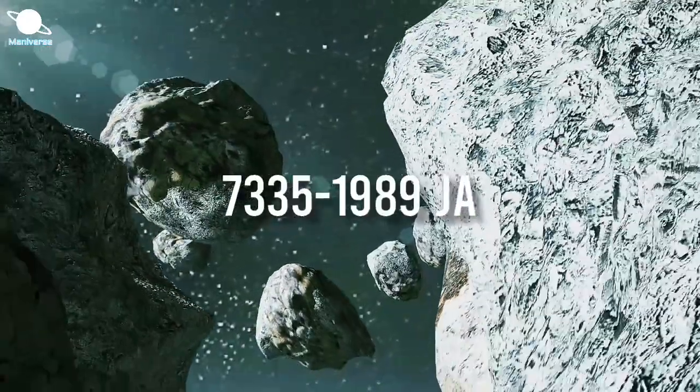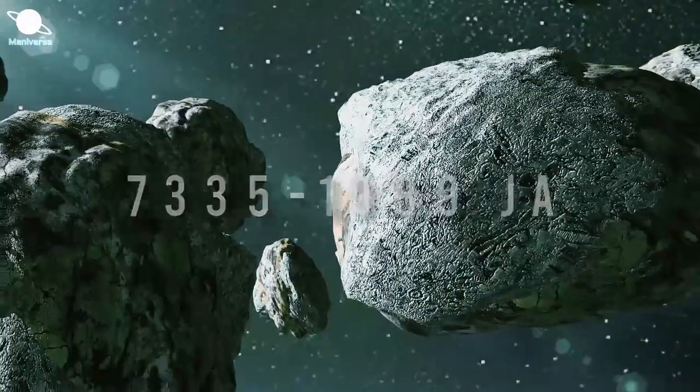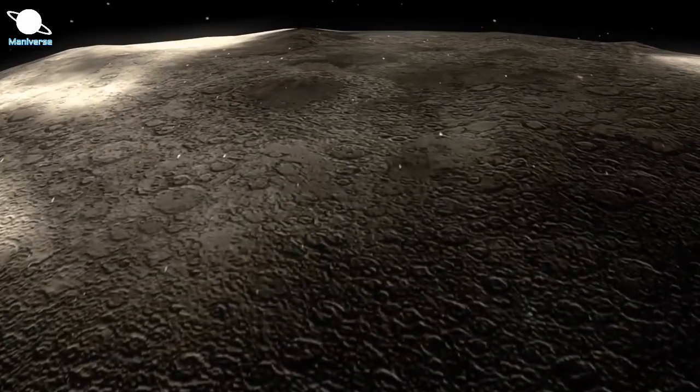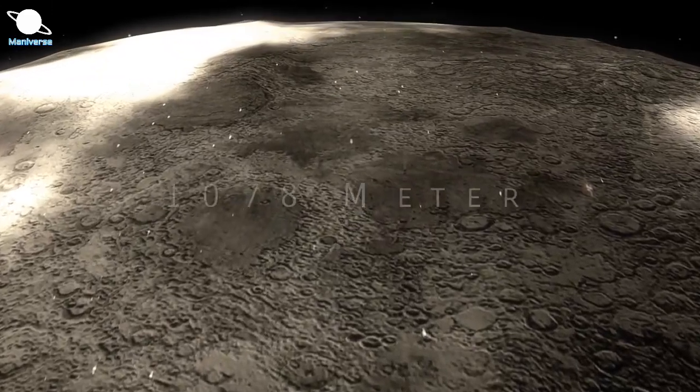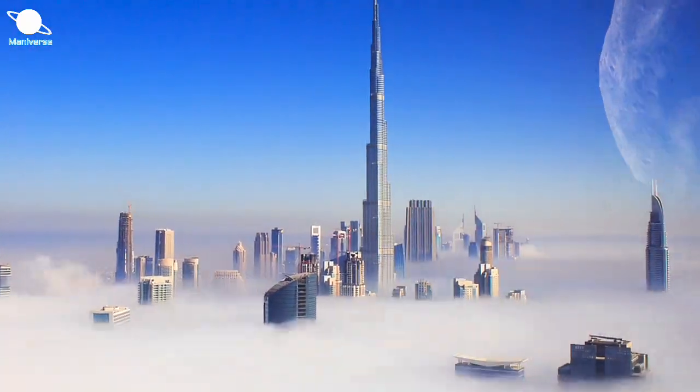Asteroid 7335 or 1989 JA is one of the biggest near-Earth objects. This asteroid measures up to 1078 meters in diameter. For comparison, it is even bigger than the size of the Burj Khalifa.